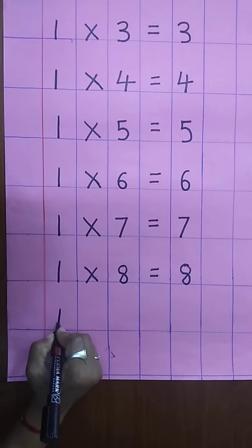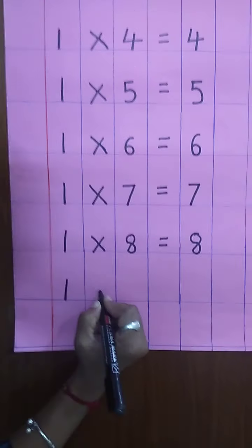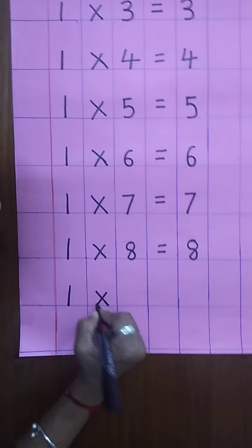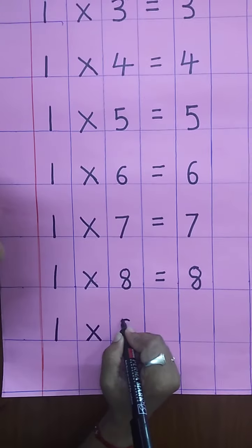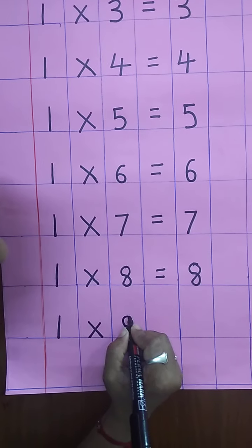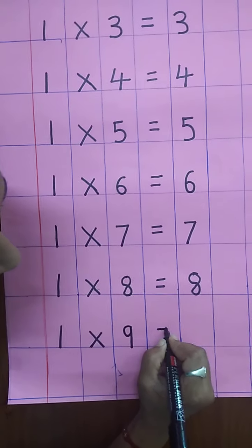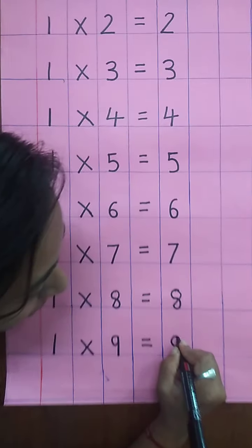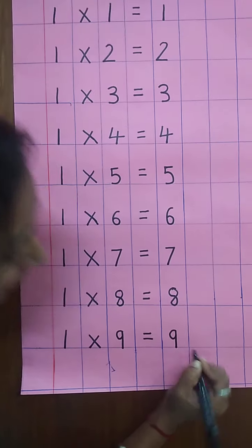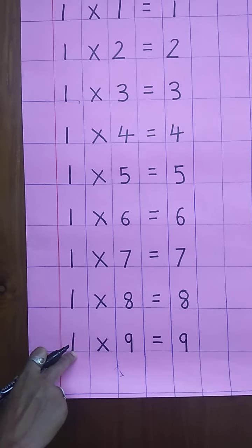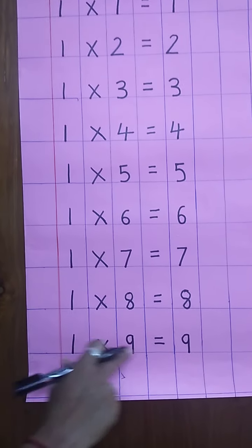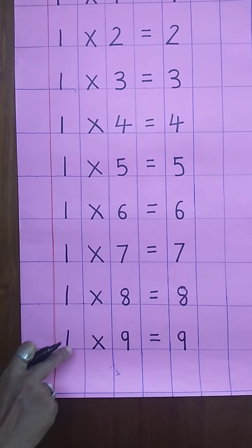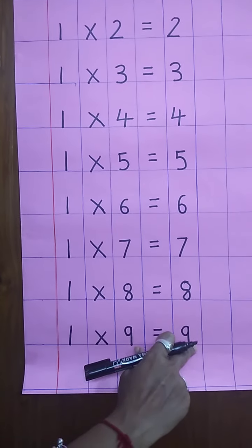Again, write down one. Multiplying sign. Write down nine. Equal sign. And again, write down nine. One nine's are nine. Speak and write, children. One nine's are nine.